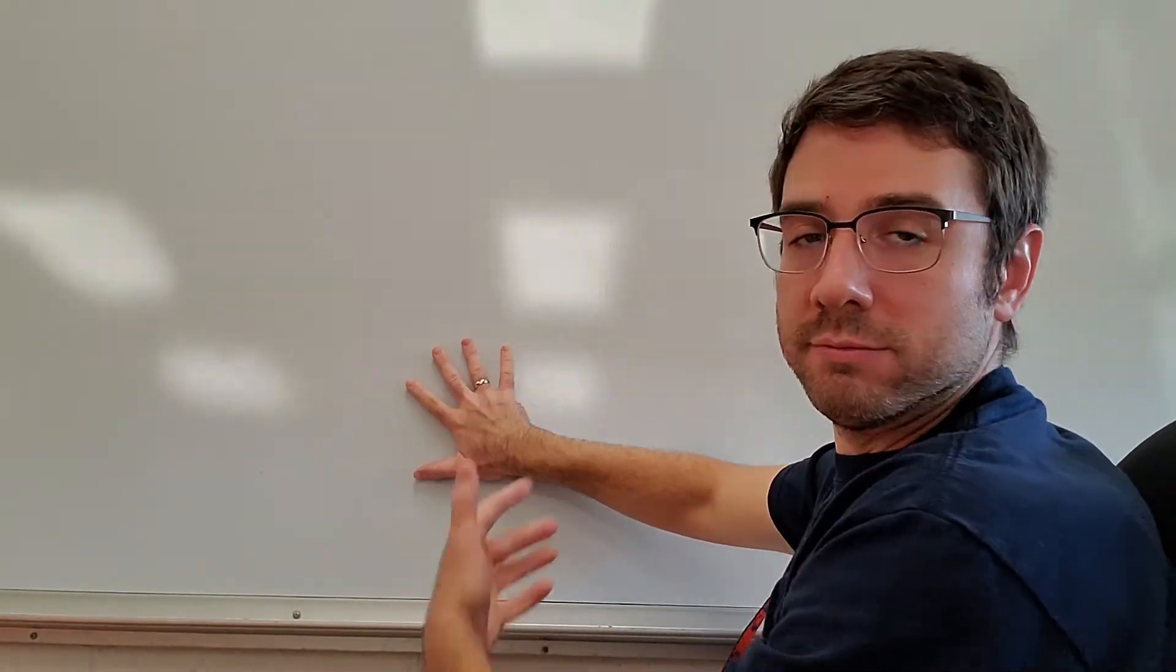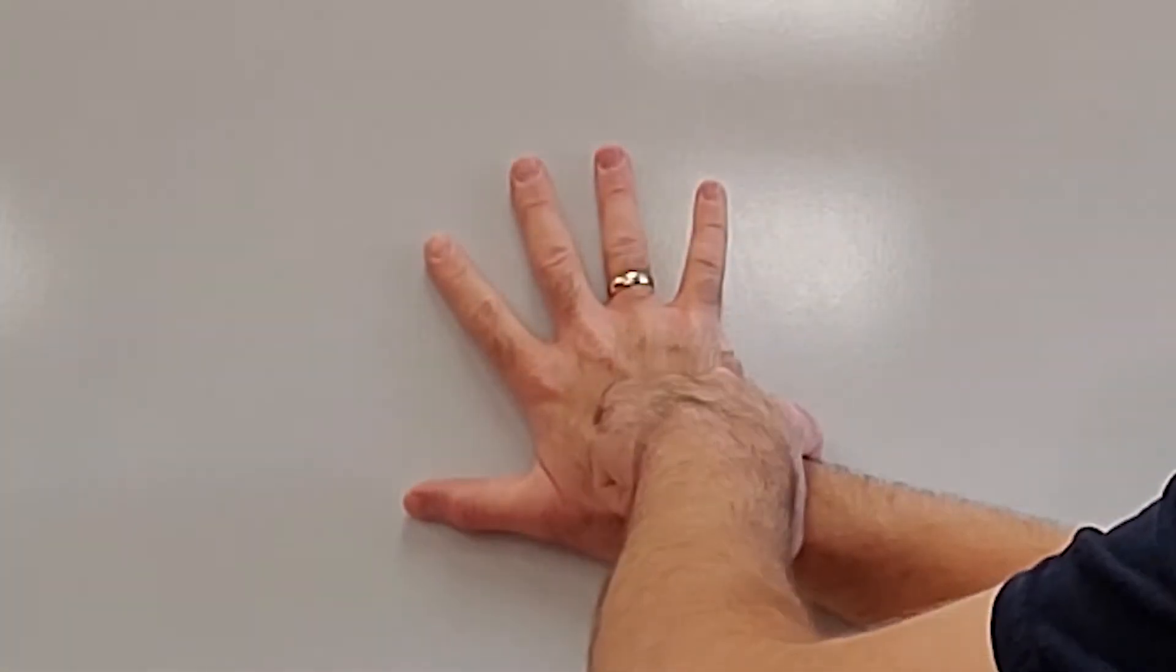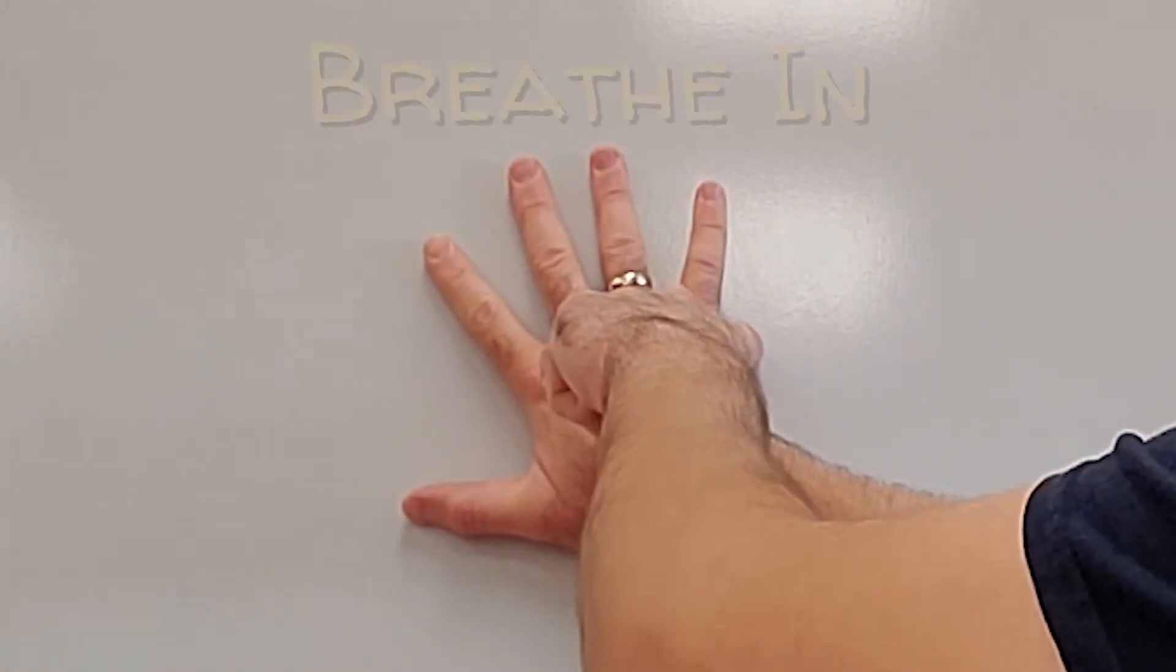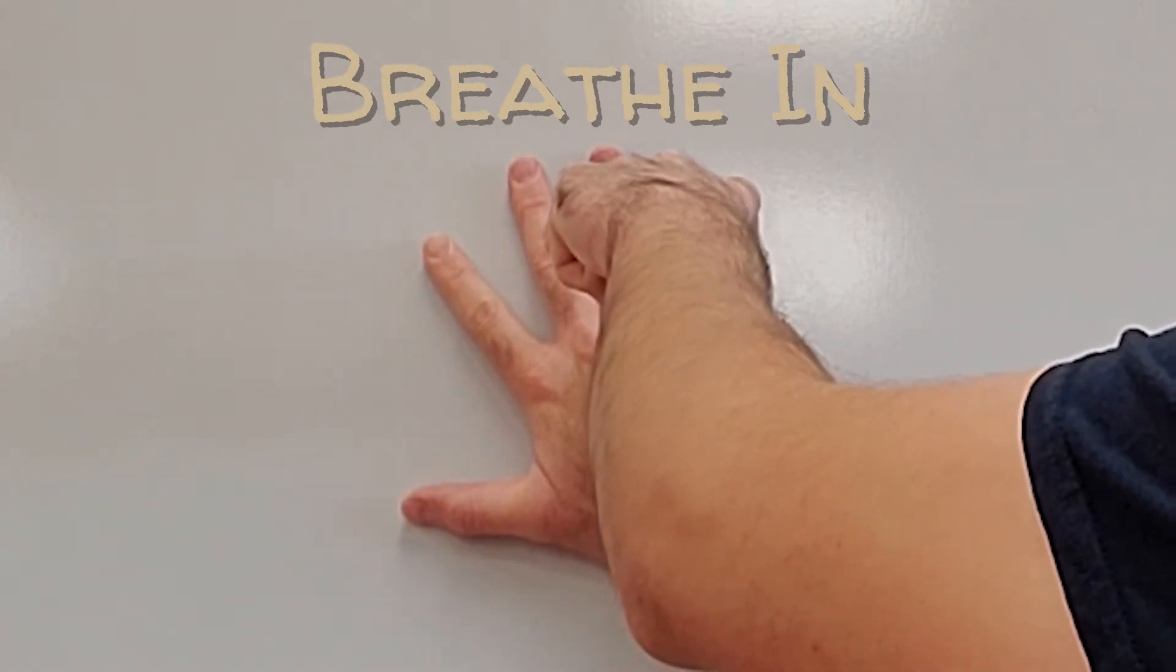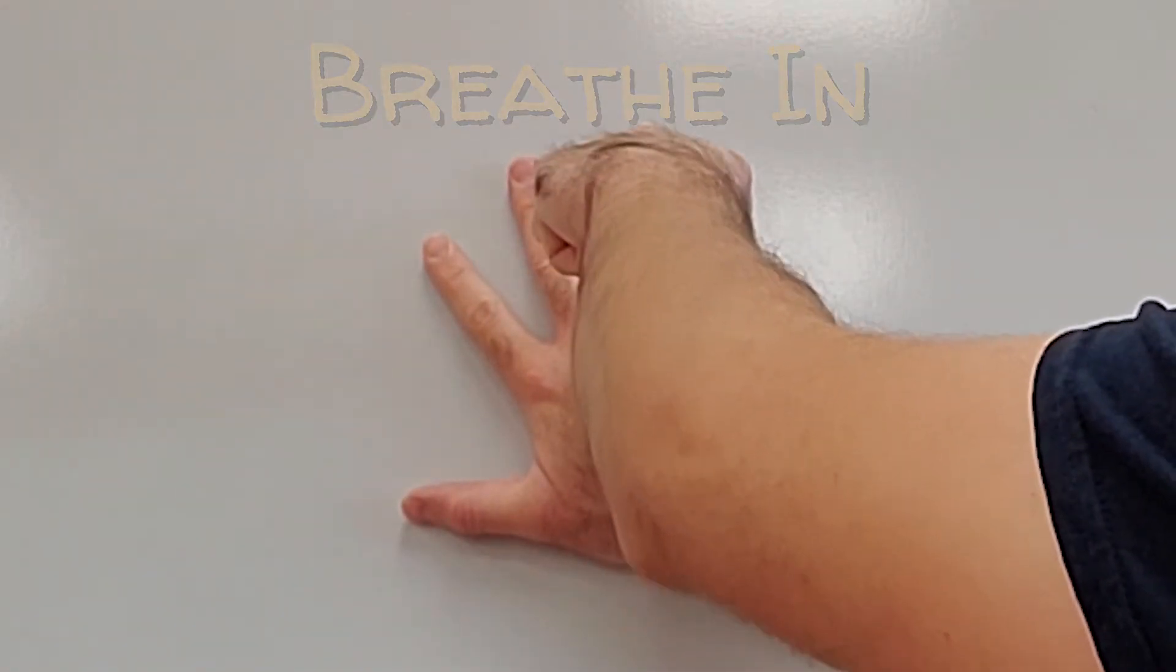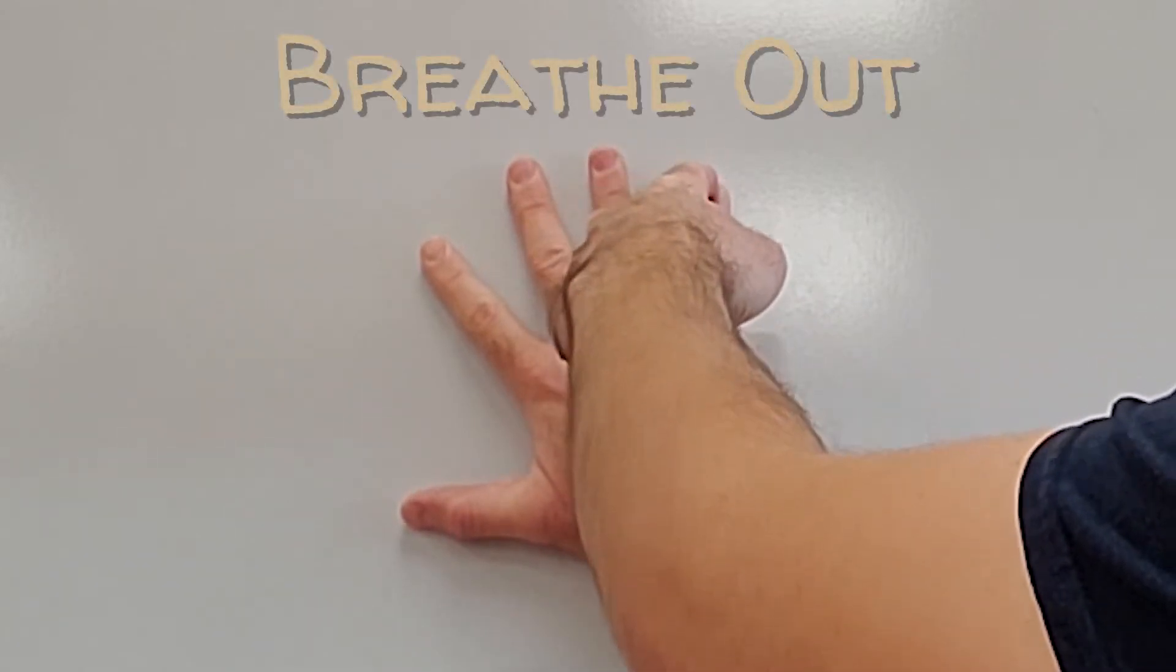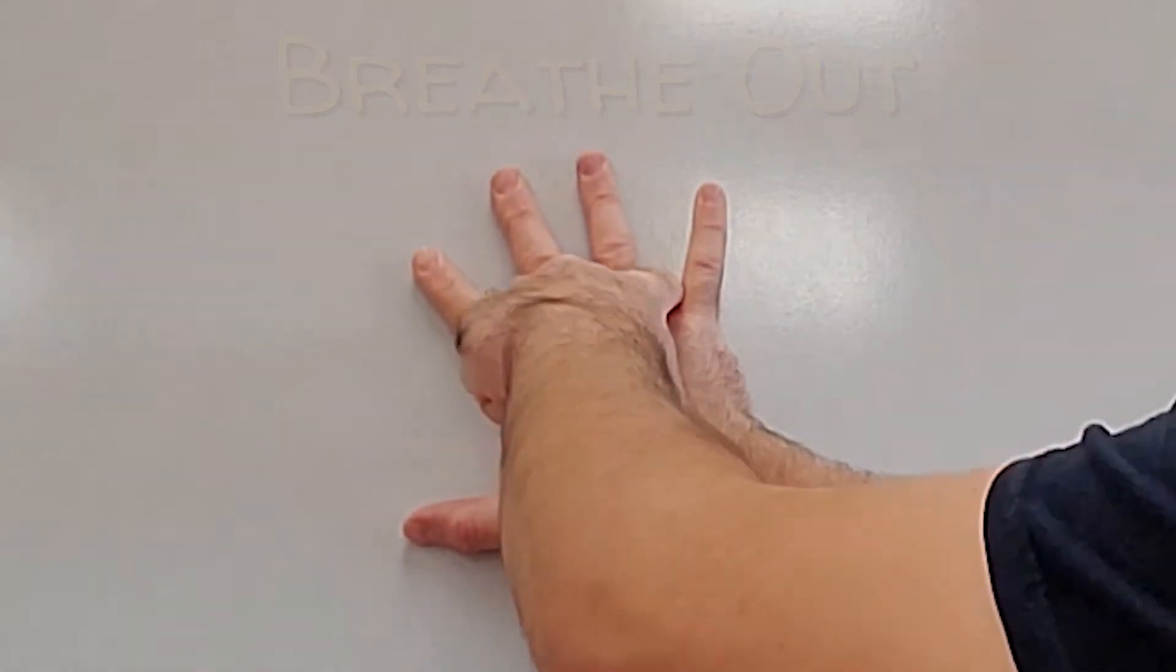So I'll quickly run through as an example. I'm going to breathe in now as I trace up my pinky. And then got to the top and start breathing out slowly as I trace down. Do it again with the next finger.